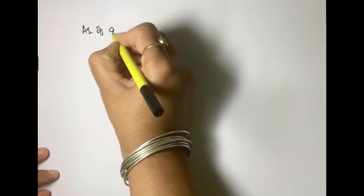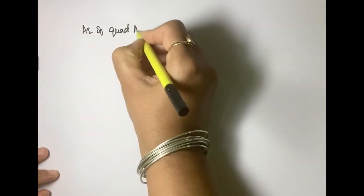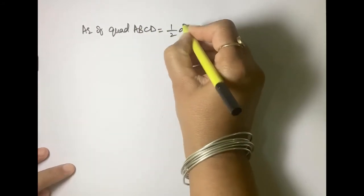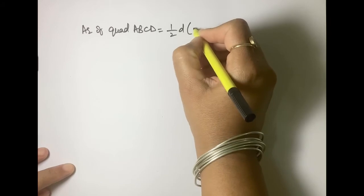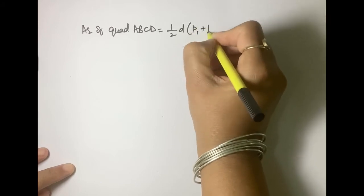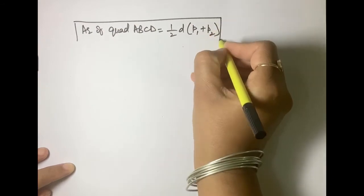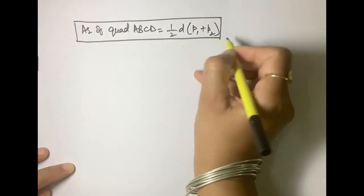Now what we can write it? Area of quadrilateral ABCD is equal to half of diagonal into sum of offsets. This is the generalization of area of quadrilateral.